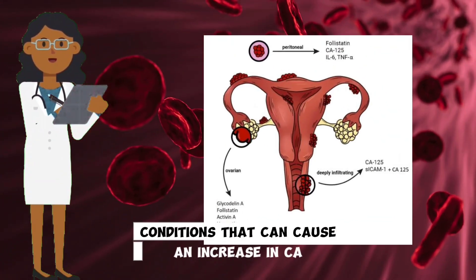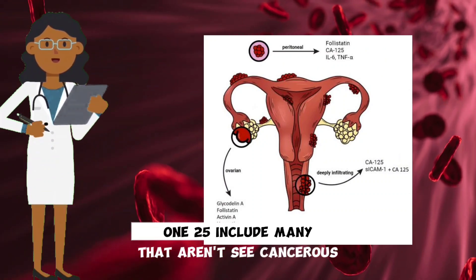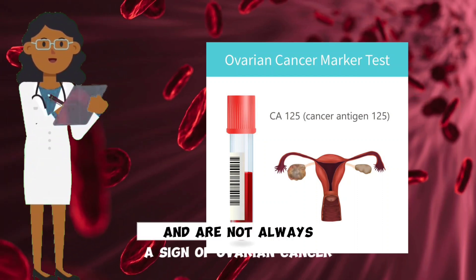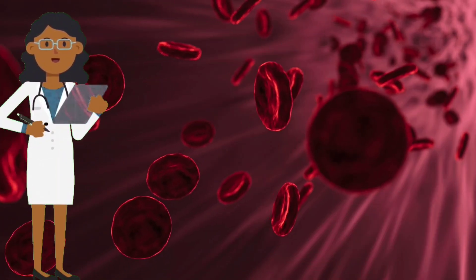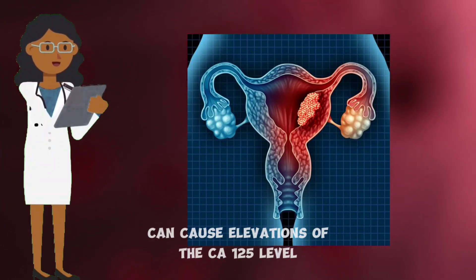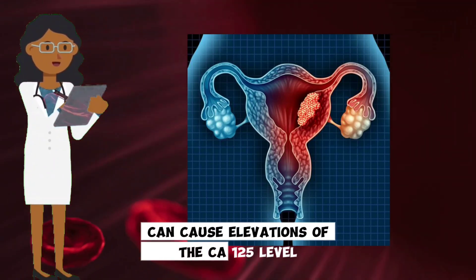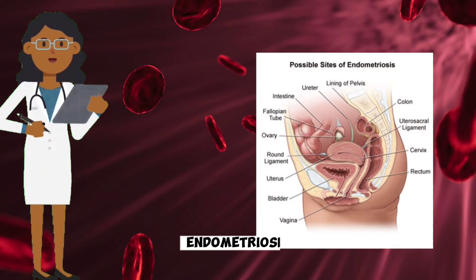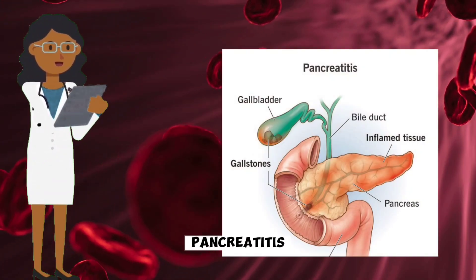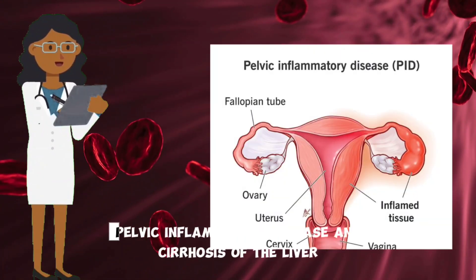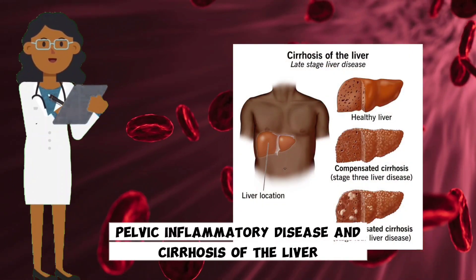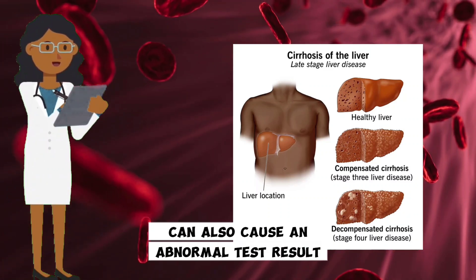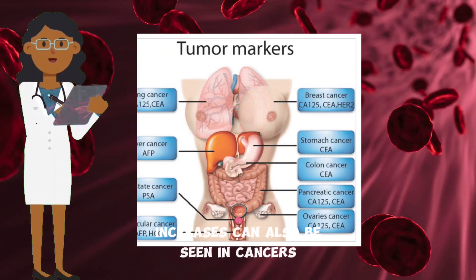Conditions that can cause an increase in CA-125 include many that aren't cancerous, occurring in about one percent of healthy women and are not always a sign of ovarian cancer. A number of benign conditions can cause elevations of the CA-125 level, including pregnancy, endometriosis, uterine fibroids, pancreatitis, normal menstruation, pelvic inflammatory disease, and cirrhosis of the liver. Benign tumors or cysts of the ovaries can also cause an abnormal test result.